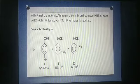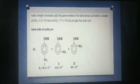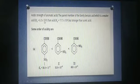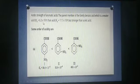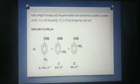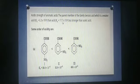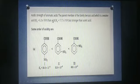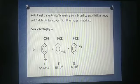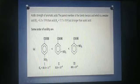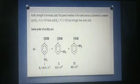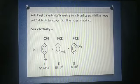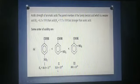Acid strength of aromatic acids. The parent member of the family, benzoic acid which is a weaker acid. Ka value 6.3 into 10 to the power minus 3. Then, acid Ka is equal to 17.7 into 10 to the power minus 5 but stronger than acetic acid. We can see that nitro group in para position, in meta and in ortho. And the Ka values are given.